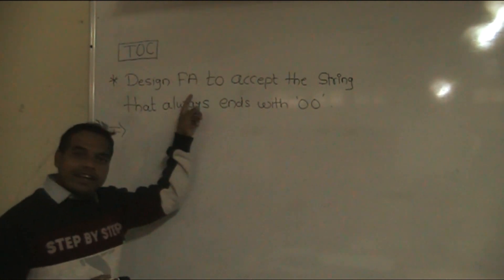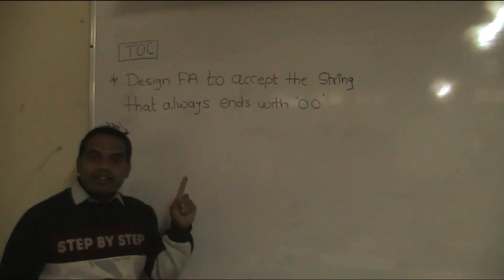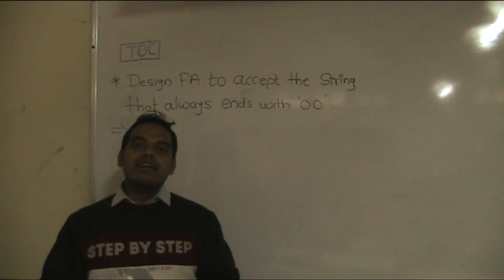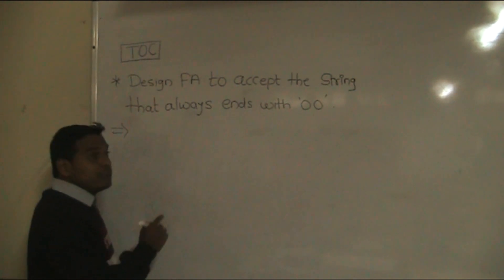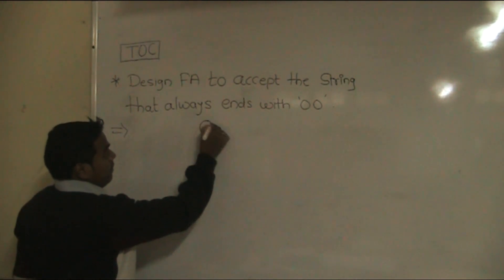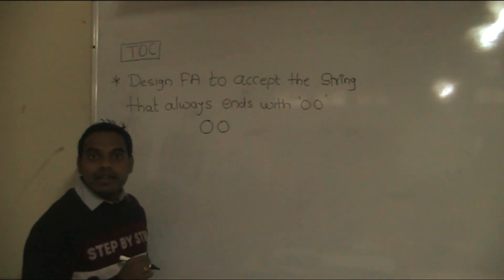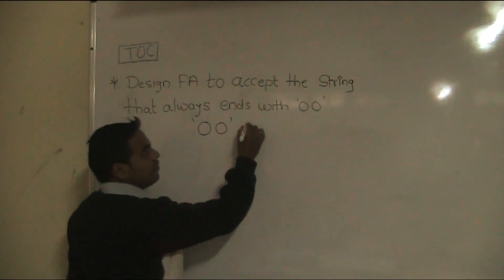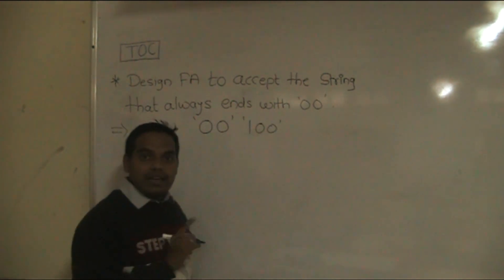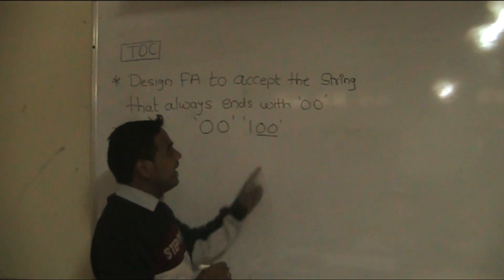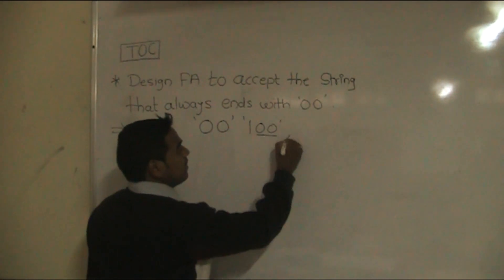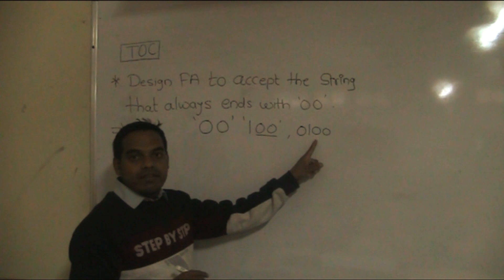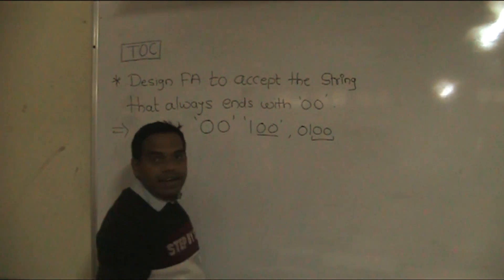The problem is: design a finite automata to accept the string that always ends with 00. This means a string consisting of only 00 is also accepted. So the minimum string we have to consider is 00. If the string consisting of 100, that is also accepted because it ends with 00. If the string is 000, that is also accepted because it ends with 00.